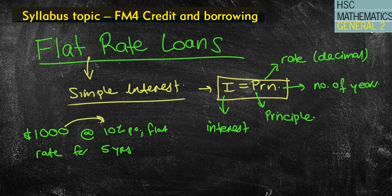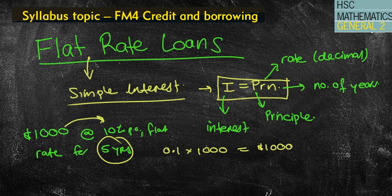So in this case, we're being charged 10% of the initial $1,000, which is $100. So for every single year that I'm having this loan, I'm being charged $100 on top. So because I'm having this loan for five years, that means I'm being charged five lots of $100, which becomes $500.